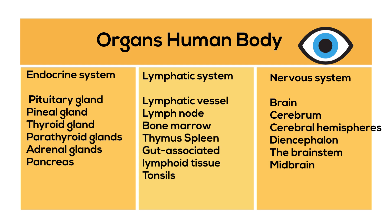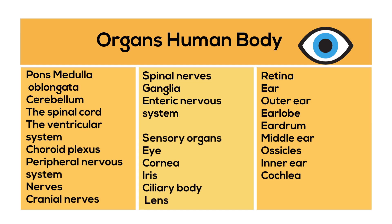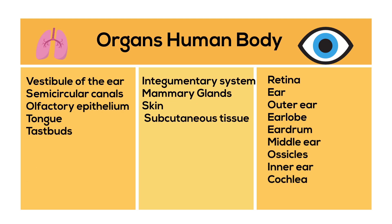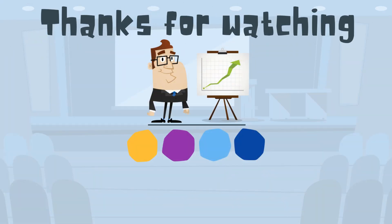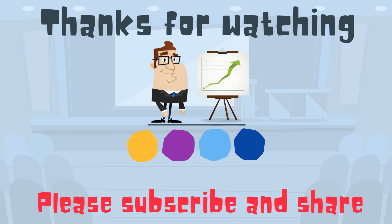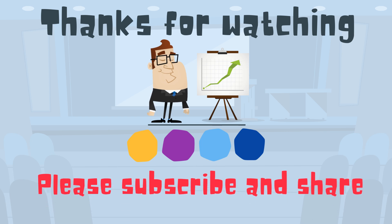So there we go. We have 79 organs depending on your definition and they all work together to keep us alive. Thanks for watching, and MooMooMath uploads a new math and science video every day. Please subscribe and share.